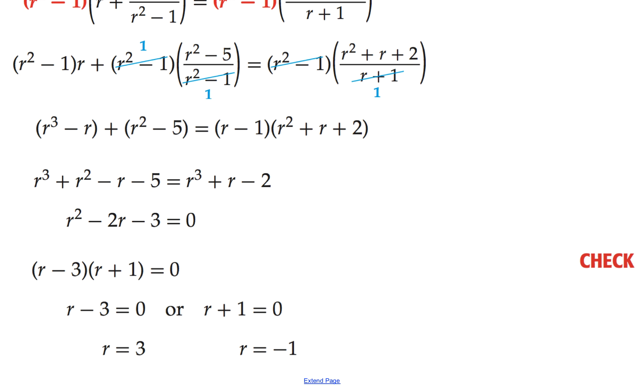r equals negative 1. So that is an extraneous solution. We can throw that out. And we're not even going to check that because we know that will give the denominator a 0 value. So the only value we need to check is r equals 3.